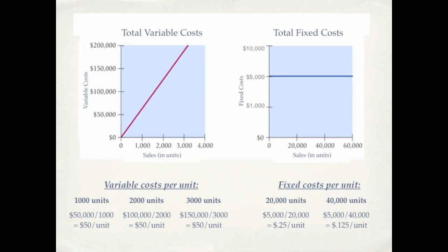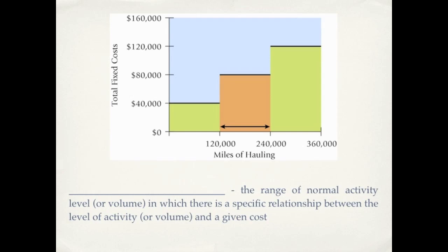So now this brings us to what we call a relevant range. It's important to note that, for example, here we have a graph of fixed costs. Notice that between 0 and 120,000 miles our fixed costs stay the same. Now we know that total fixed costs do not change, but it's increasing. If you note between 120,000 and 240,000 miles, our fixed costs are $80,000.